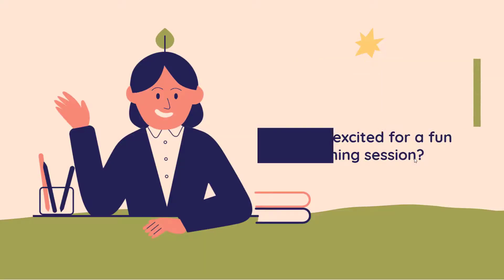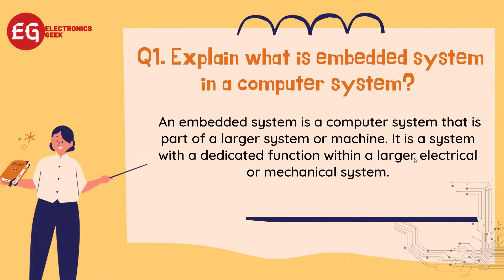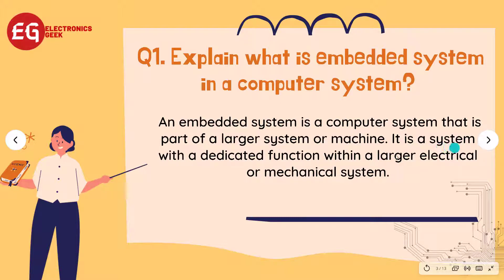Question 1: Explain what is an embedded system in a computer system? Answer: An embedded system is a computer system that is part of a larger system or machine. It is a system with a dedicated function within a larger electrical or mechanical system.